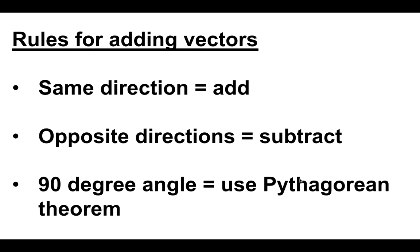Some rules for adding vectors — remember displacement is a vector. If the arrows are in the same direction, you add them. If they're in opposite directions, you subtract them. If they're at 90-degree angles to one another, you use the Pythagorean theorem: a² + b² = c². a and b are the sides of the triangle touching the 90-degree angle; c is the longest side directly across from the 90-degree angle, not touching it.